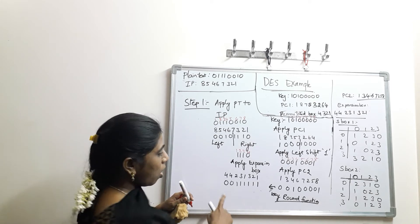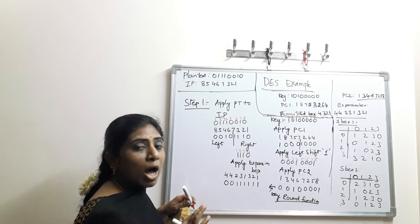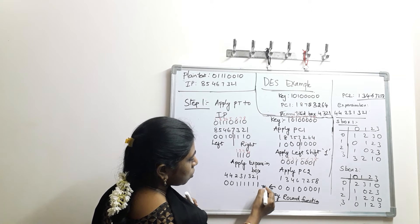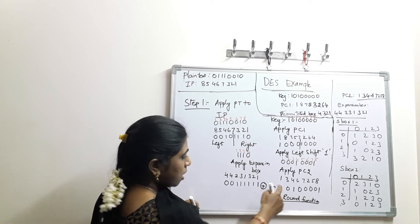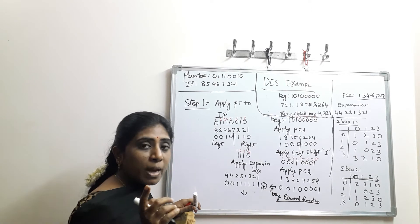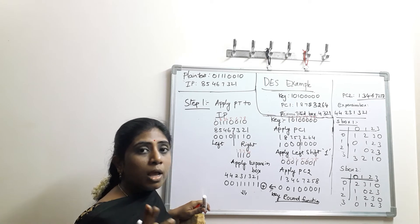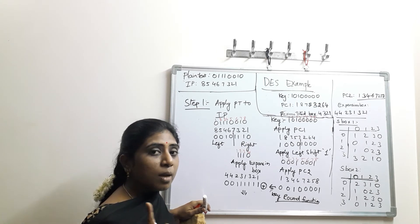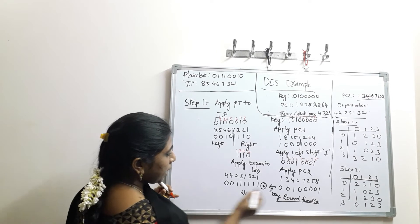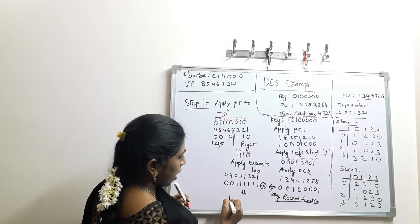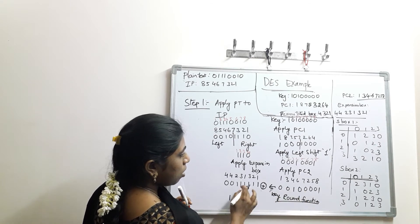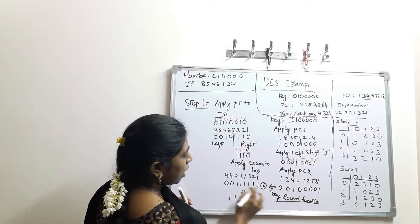We now XOR the expanded bits with the key values. The XOR rule is: 0 XOR 0 = 1, 1 XOR 1 = 1, 1 XOR 0 = 0, 0 XOR 1 = 0. Applying these rules, the XOR output is: 1, 0, 0, 1, 1, 1, 1, 0, 0, 1, 0, 0, 1, 0, 0. We get 8 number of output bits after XOR.